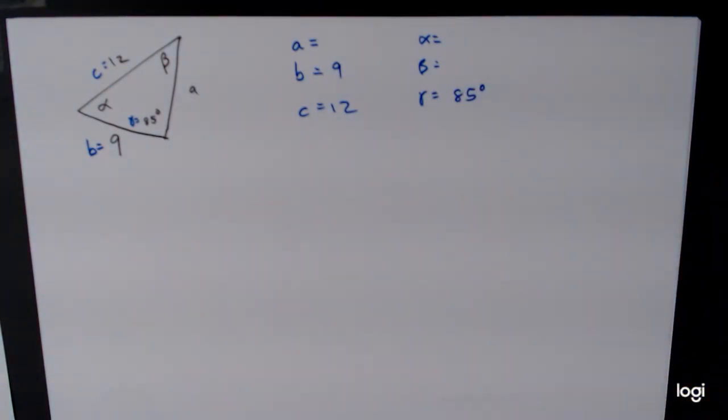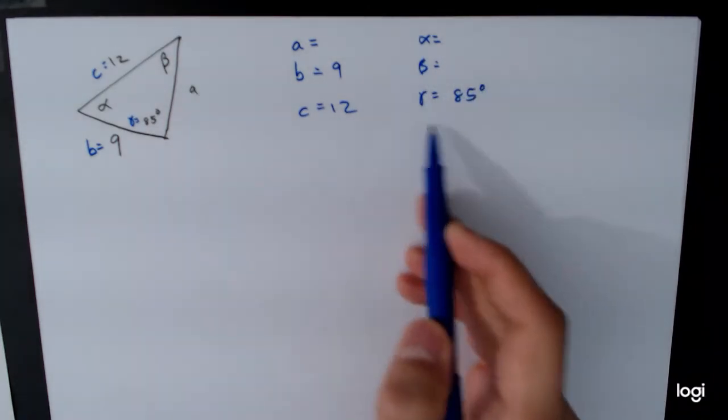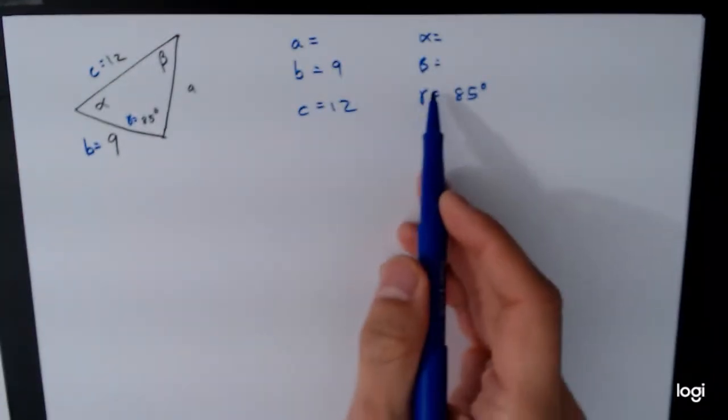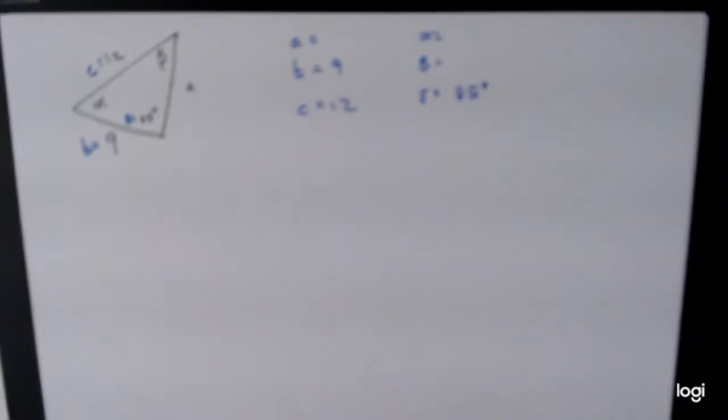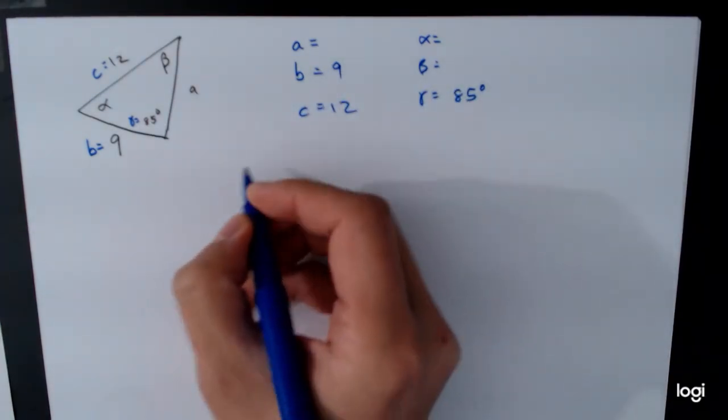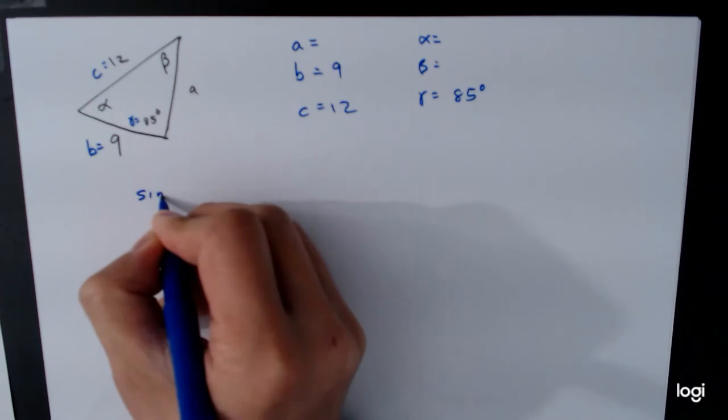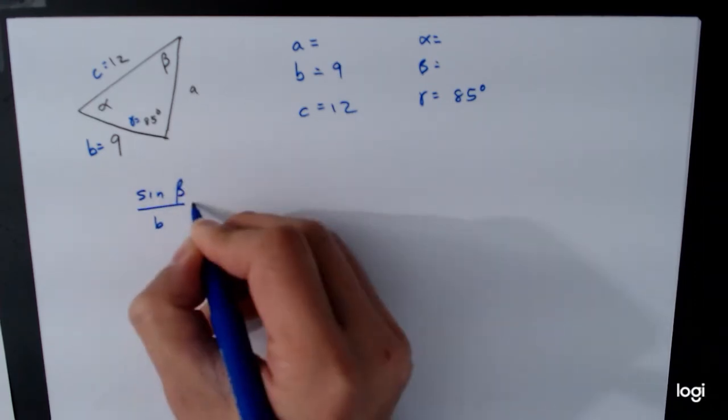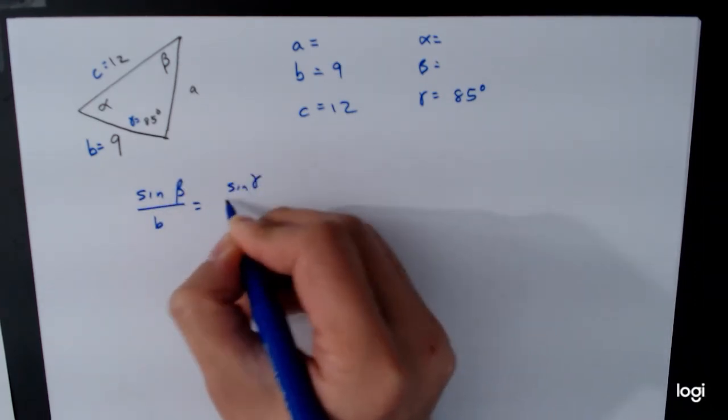And so one thing you can see immediately is this time we can't solve for the angle first, but we can look at the relationships that we have and see that we will be able to solve for beta using the law of sines, so sine of beta over B is equal to sine of gamma over C.